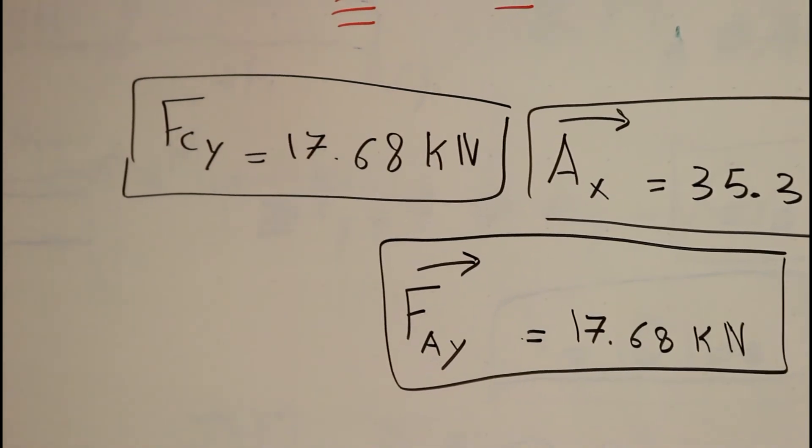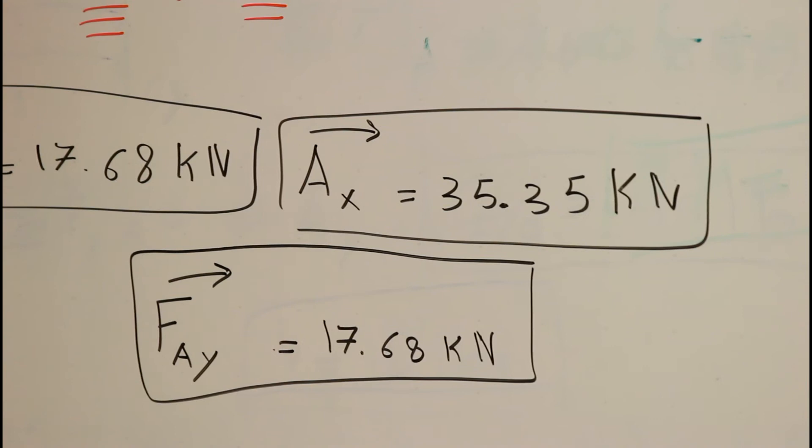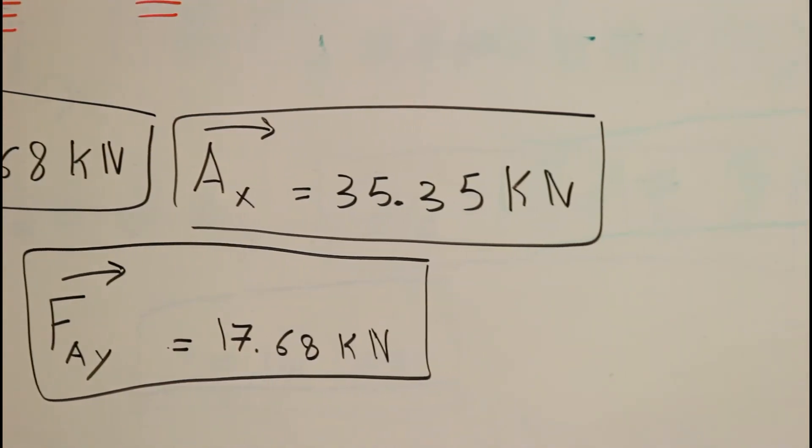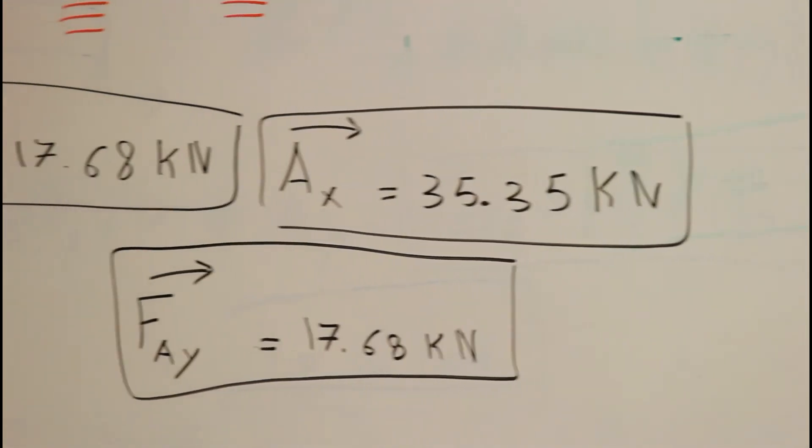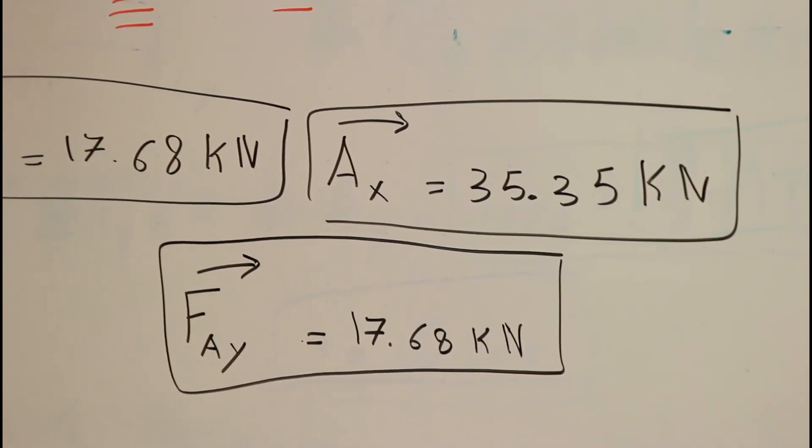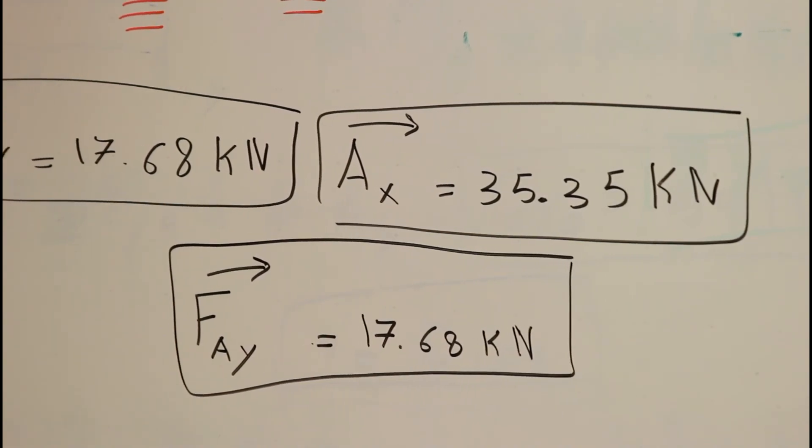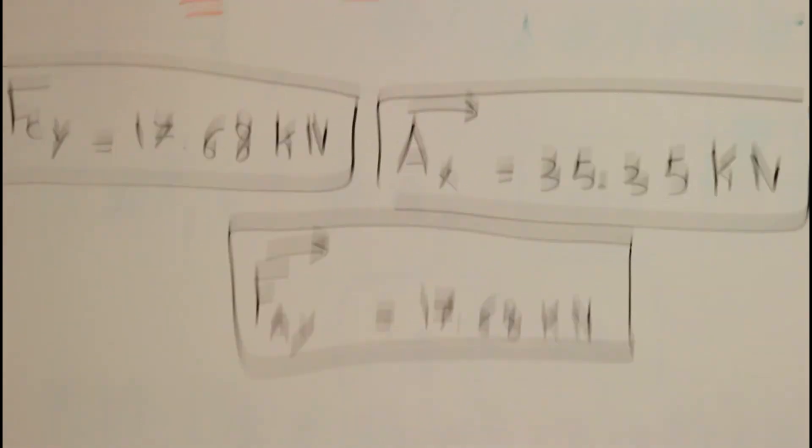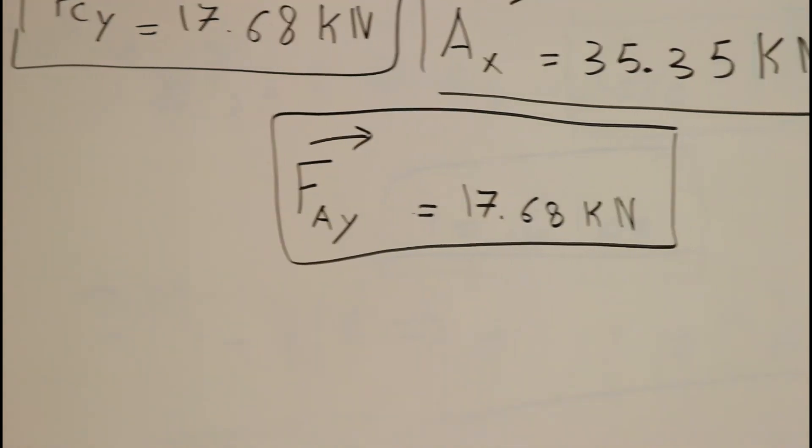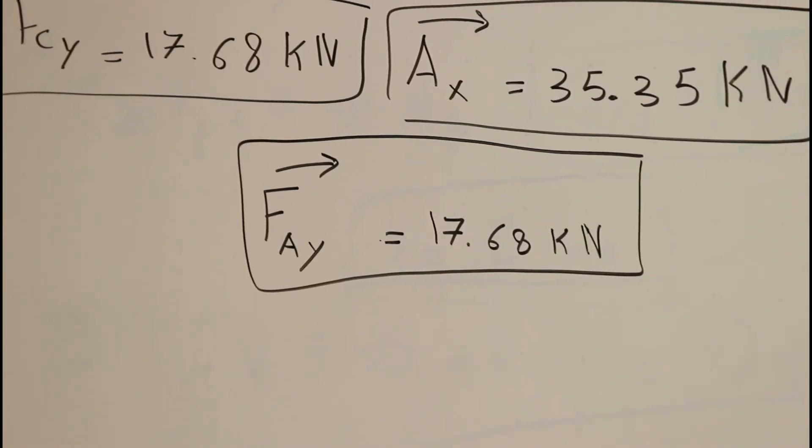FcY equal this, and the forces in the X direction equal to 35.35 kilonewtons. Not newtons, so it's going to be 3500 newtons. And FcY of point A, which is FAY, equal to 17.68 kilonewtons.